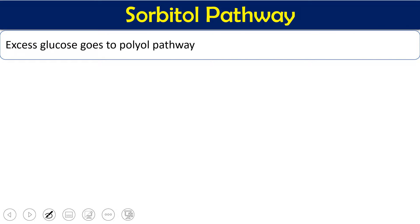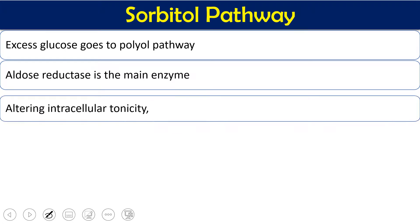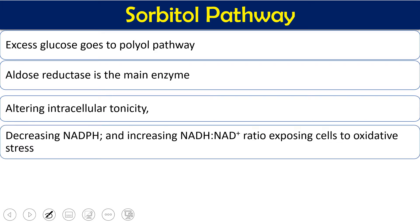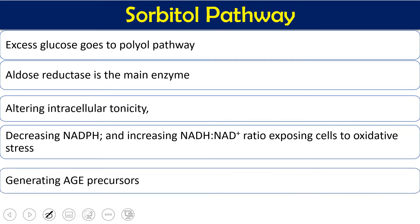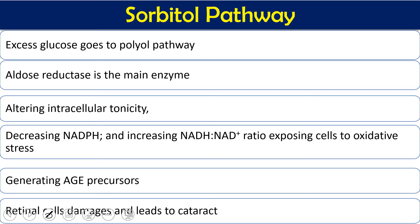In summary, when excess glucose is present, it goes through the polyol or sorbitol pathway rather than the normal glycolytic pathway. Aldose reductase is the main culprit — it increases intracellular tonicity because sorbitol accumulates water, making cells turgid so that turgor pressure increases and cells become non-functional. The decreased NADPH and increased NADH ratio exposes cells to oxidative stress since the antioxidant system is diminished. Additionally, advanced glycated end products are generated, damaging proteins. Ultimately, retinal cells are damaged, leading to cataract — a condition called retinopathy.